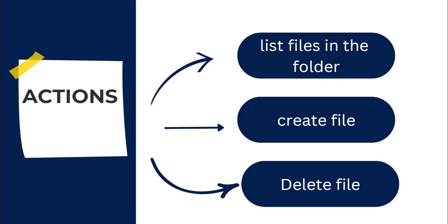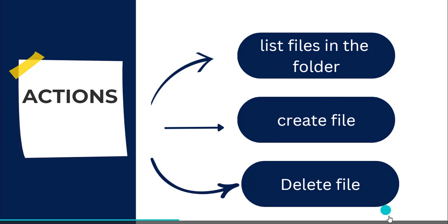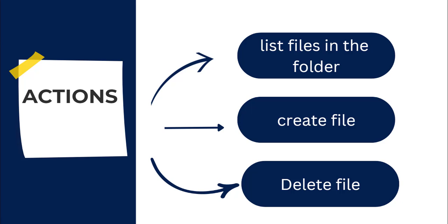These are the three actions we are going to use in our flow. First, we will see how many files are in the folder using the List Files in Folder action. After that, we will use the Create File action to create the file in the destination folder, and finally we will delete the files in the source folder. We are using three different actions to move multiple files, because the Move or Rename a File action can only move a single file from source to destination.